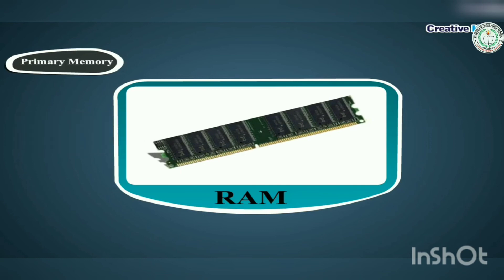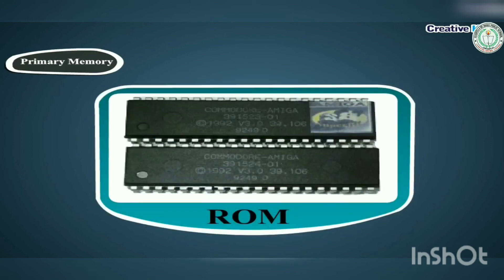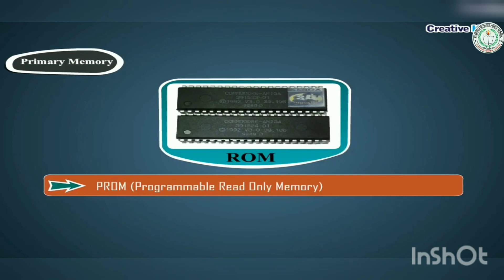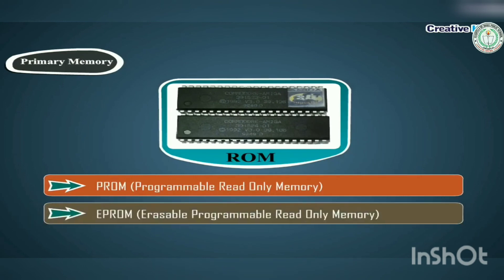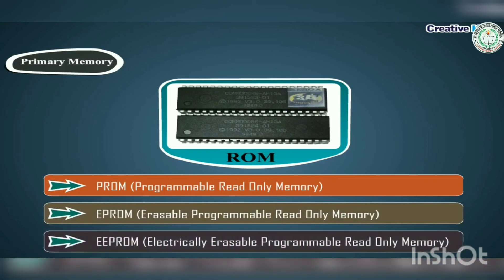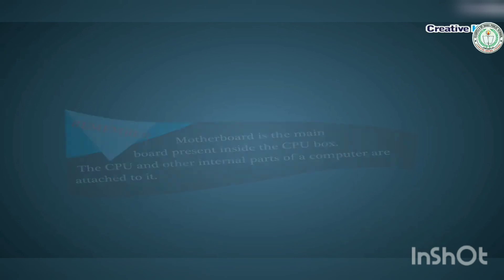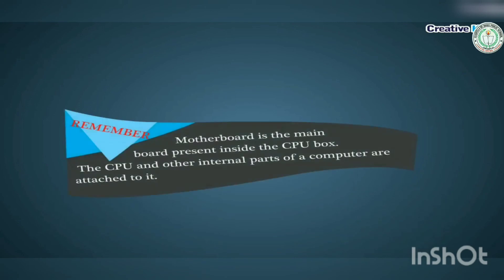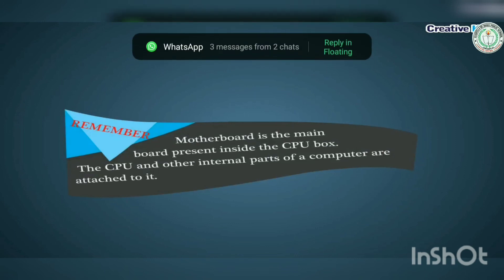RAM data gets erased when the computer is switched off. ROM (Read Only Memory) holds the instructions given by the manufacturer to operate the computer — it is a permanent memory. There are three types of ROM: PROM (Programmable Read Only Memory), EPROM (Erasable Programmable Read Only Memory), and EEPROM (Electrically Erasable Programmable Read Only Memory). Remember, the motherboard is the main board present inside the CPU box, and the CPU and other internal parts are attached to it.